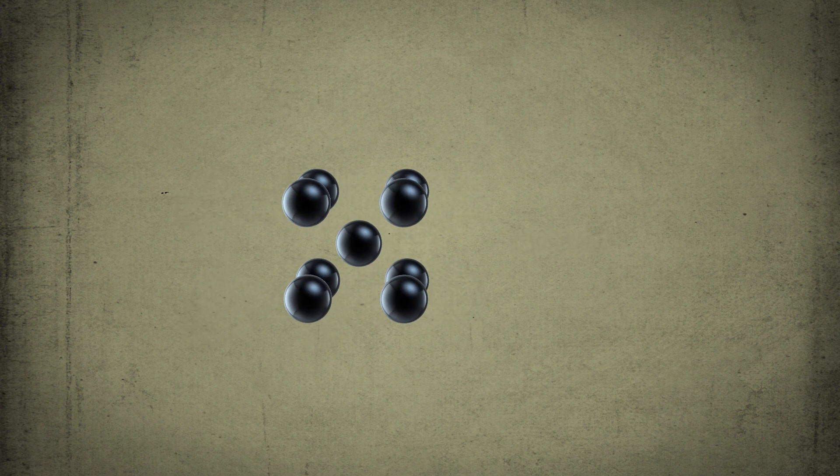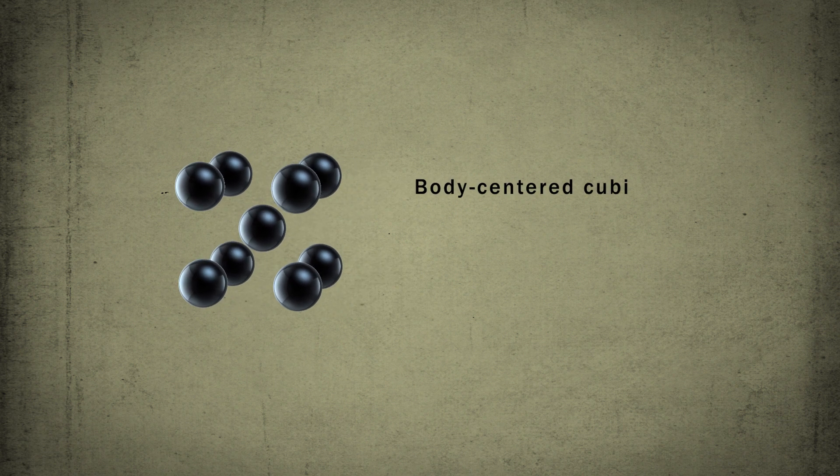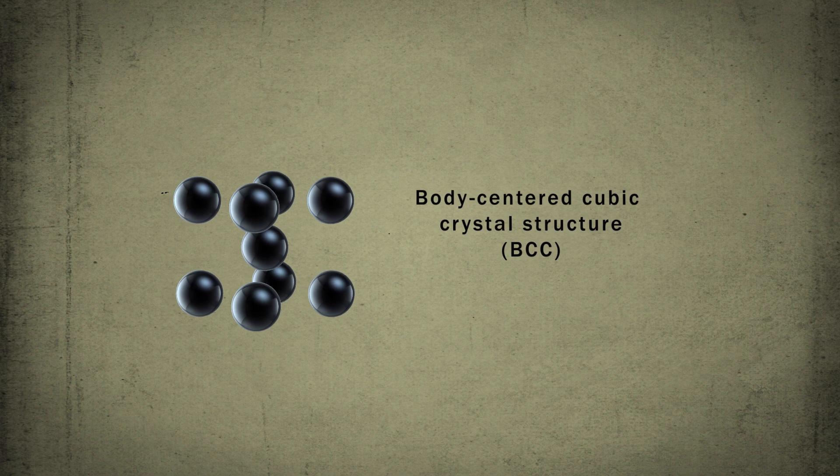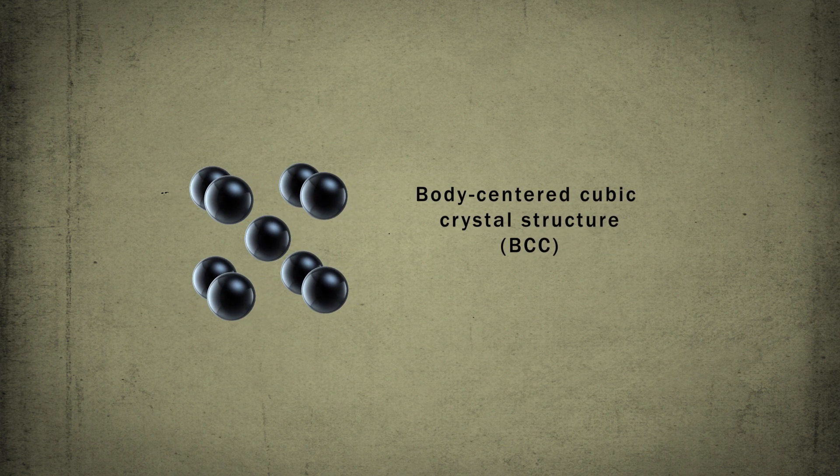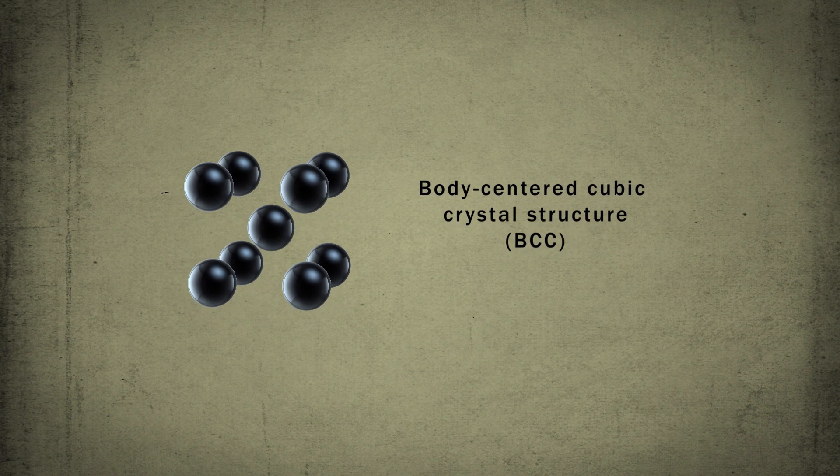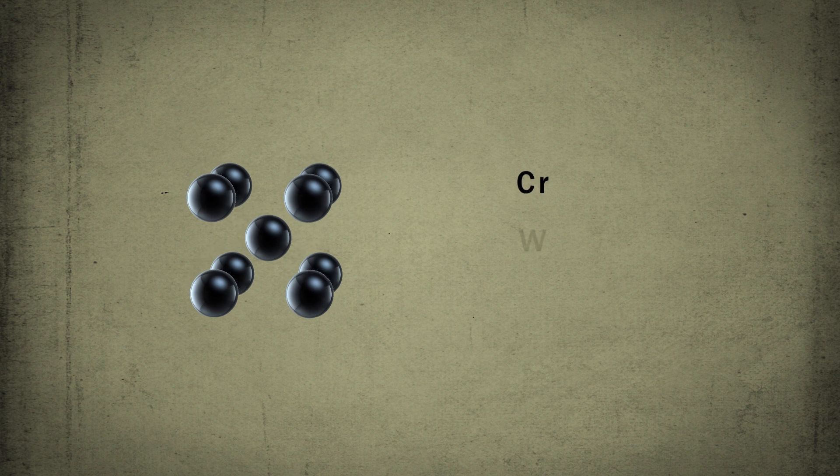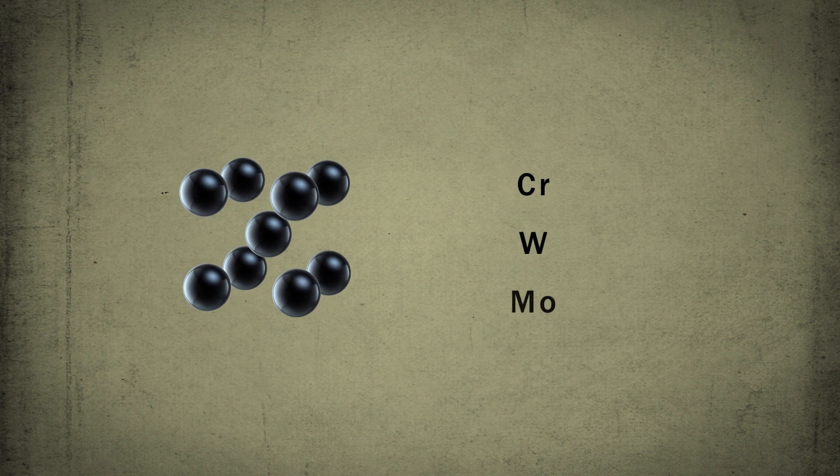In a body-centered cubic crystal structure, briefly BCC, atoms are located at eight cell corners and a single atom at the cube center. Some of metals having this crystal structure are chromium, tungsten and niobium.